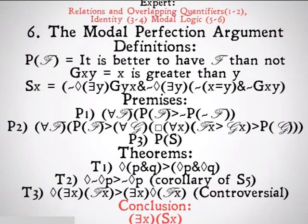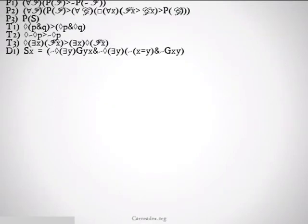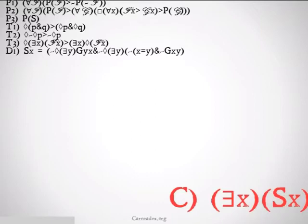It's important to note this isn't exactly how the modal perfection argument is formulated. It's pretty close, though, and it will work for our understanding of it. Let's take a look. Here I've listed the three premises, the three theorems, and the one definition that we're going to use when going through this argument. And we have our eventual conclusion of there exists an x such that x is supreme. That's our goal, s being supreme.